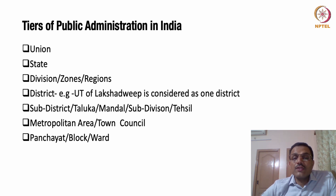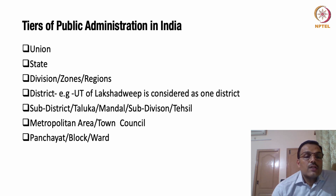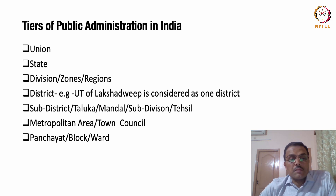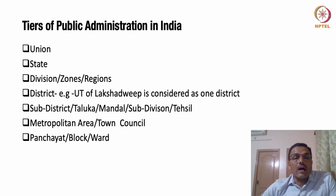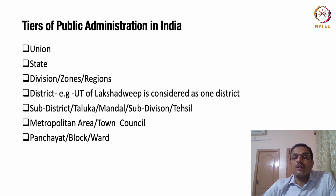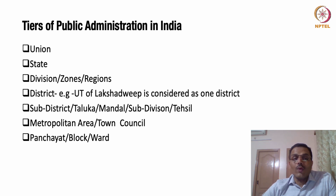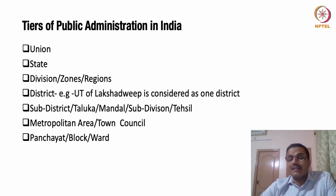Then we have divisions or zones or regions. For example, we have the western zone and the eastern zone. Some of these divisions are important because they may be based on cultural aspects or governance. Interestingly, some divisions are also based on establishment of certain tribunals — for example, the National Green Tribunal looks at different zones such as the southern zone and the western zone. The country is divided into a central zone, northern zone, northeastern zone, western zone, and southern zone.